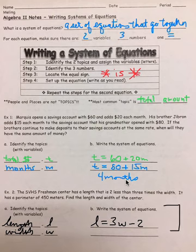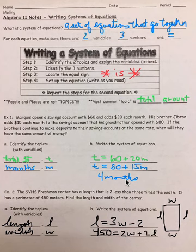So if you think of a rectangle, it is length, length, width, width. So, you would say 450 equals 2W plus 2L.